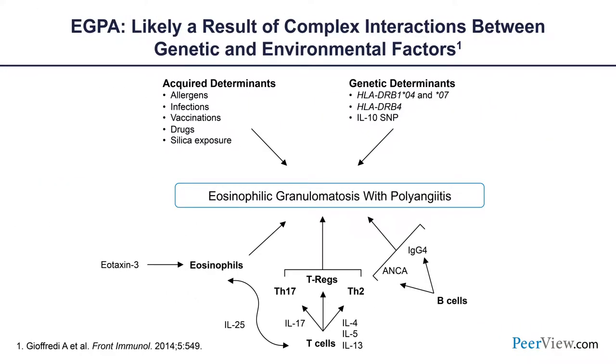ANCA, or antineutrophil cytoplasmic antibodies, can be present in 30 to 40 percent of all patients. eGPA equally affects men and women, with a mean age at onset of 48 years and a mean age at diagnosis of 55 years, showing that patients often go undiagnosed for many years. Although our understanding of what predicts disease onset remains poor, eGPA is likely the result of a complex interaction of genetic and environmental factors leading to an inflammatory response whose principal players are eosinophils, T-cells, and B-cells. eGPA has an estimated prevalence of about 14 cases per million individuals, and there are about 5,000 people in the United States suffering from eGPA right now.